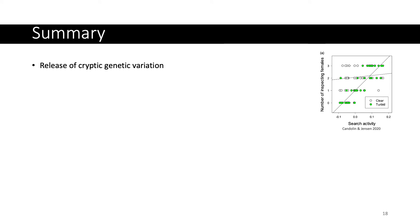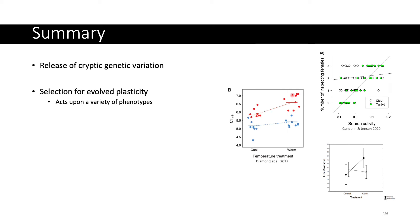Before moving on, a brief summary of these three examples. We've demonstrated that human environments can trigger the release of cryptogenetic variation with the stickleback search activity and turbidity example. We've also demonstrated that the degree of plasticity can evolve to become greater — as with acorn ants' thermal minimums — or that behavioral plasticity can be lost through genetic assimilation in stickleback populations.